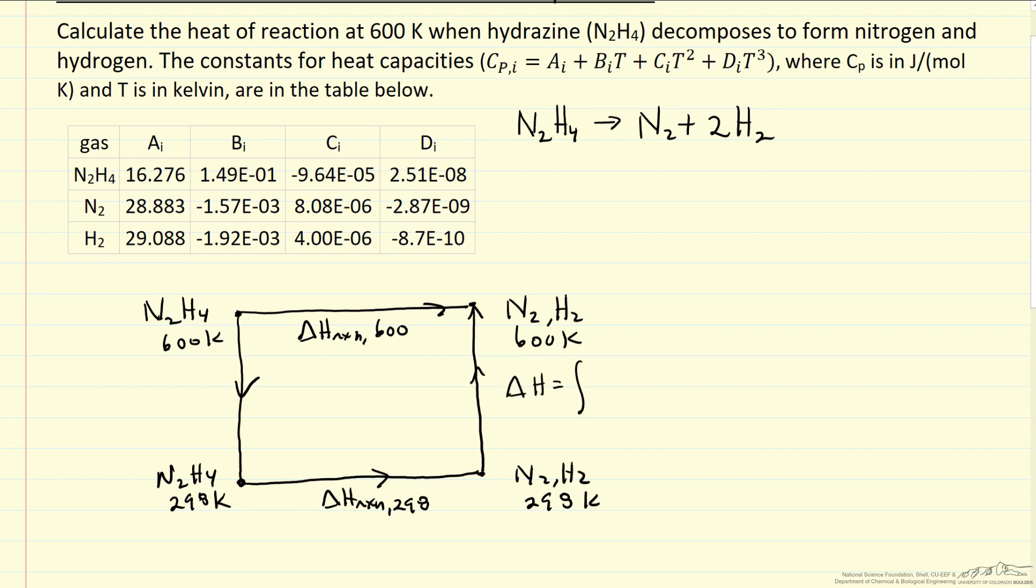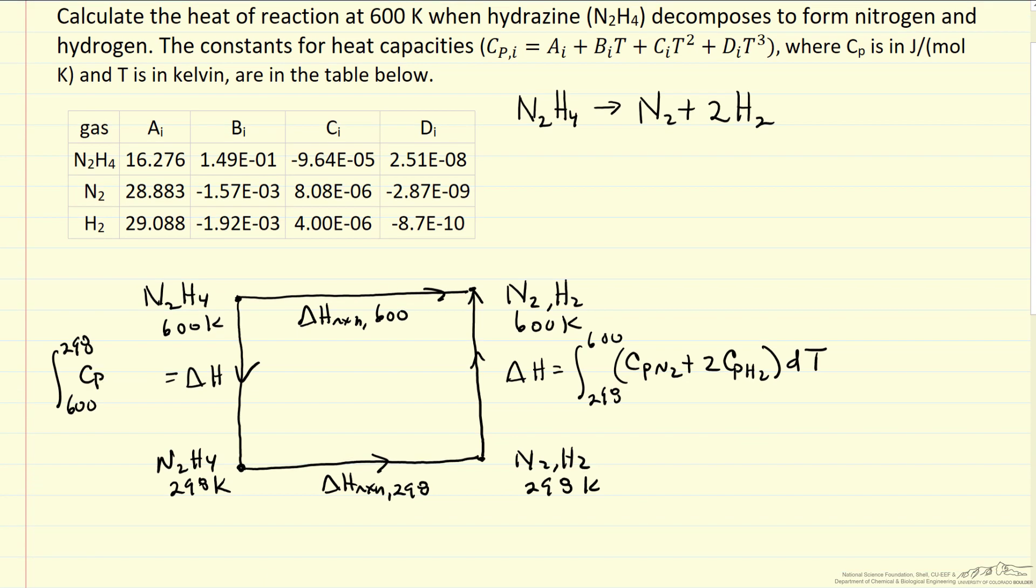This delta H is integral from 298 to 600 of heat capacity of nitrogen plus, since we have two moles, two times heat capacity of hydrogen. And this delta H here is integral from 600 down to 298 of the heat capacity of hydrazine. And so if we calculate these three terms and add them together, we get the heat of reaction at 600 Kelvin.